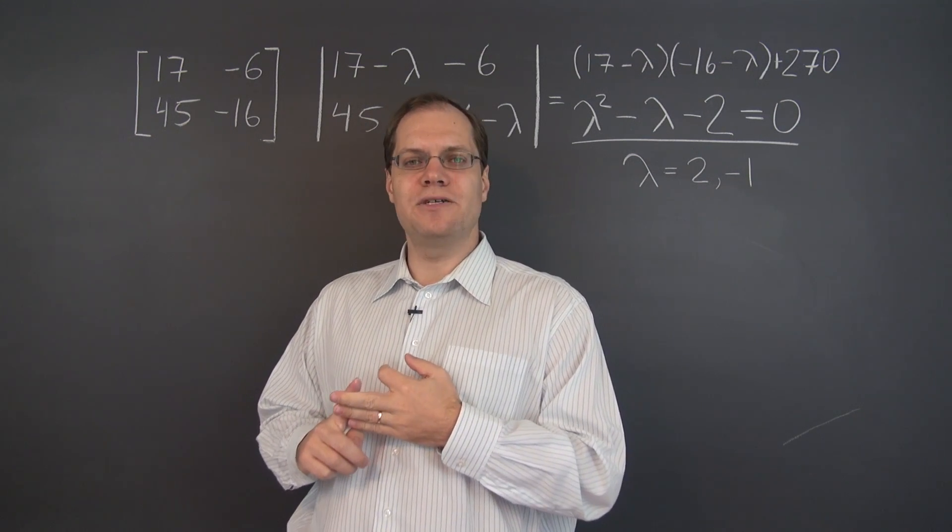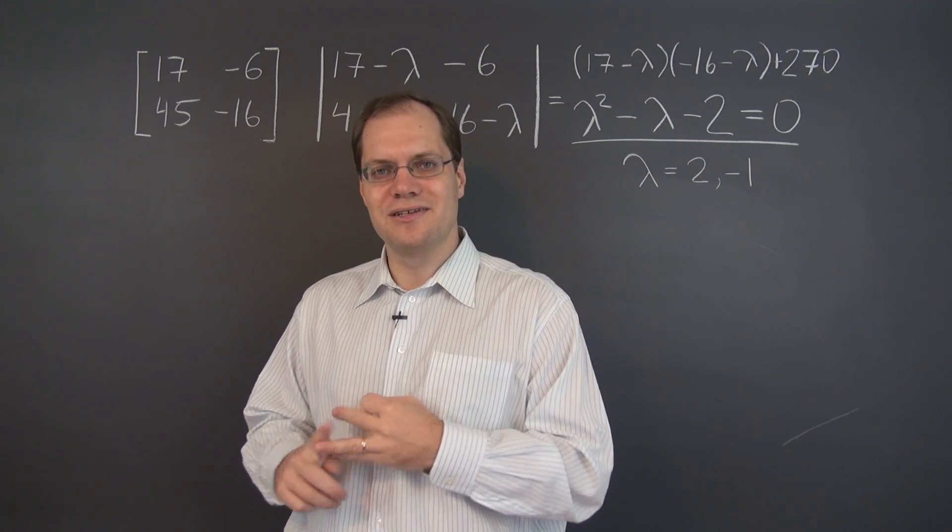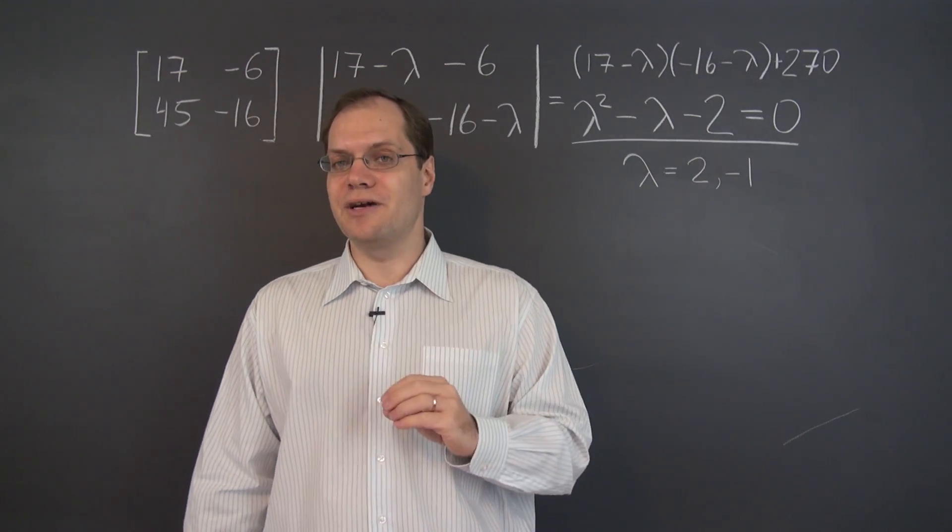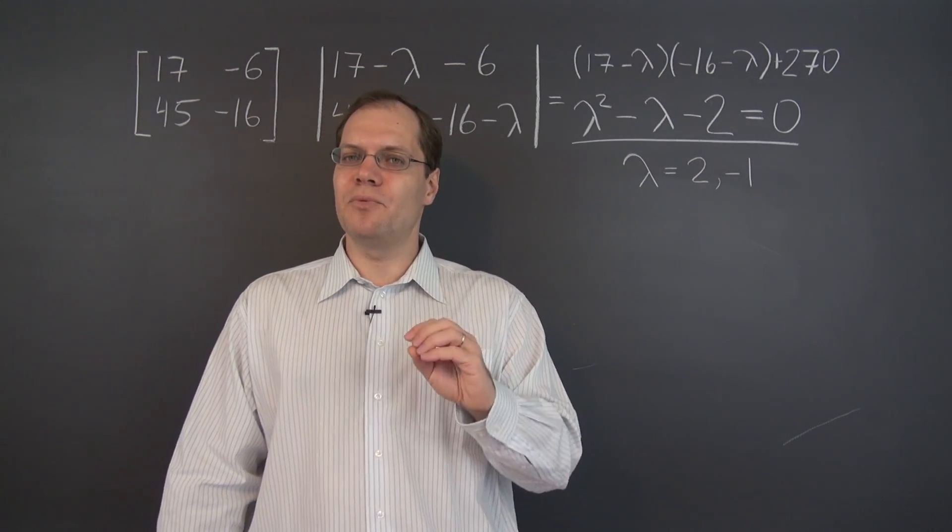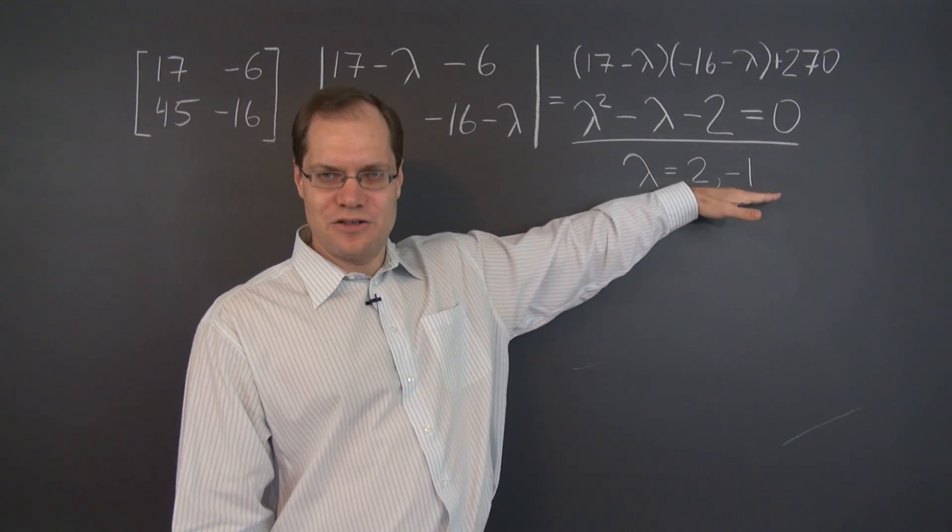And at least in the case of 2 by 2 matrices, it's very easy to prove. And for more general dimensional matrices, it's not hard to prove at all. And the proof is largely algebraic. There are many proofs. One of the simpler ones is algebraic. All right. So we have our two eigenvalues.